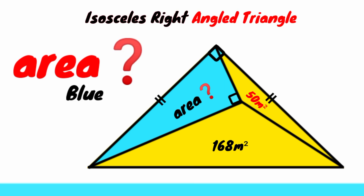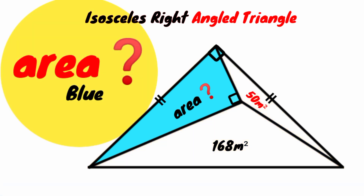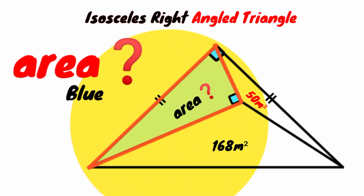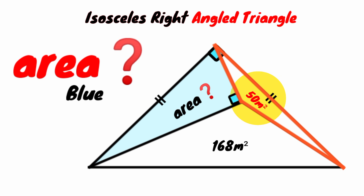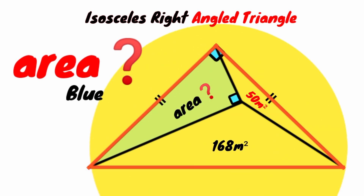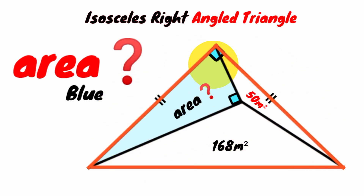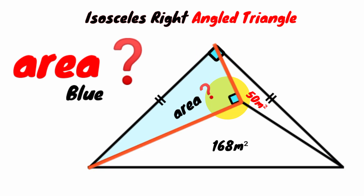Hi friends, I want to show you the perfect method to solve this question. We are to calculate the blue area, that is the area of this triangle. Look at this triangle — its area is given to be 168 meters squared, and that of this one is given to be 50 meters squared. This triangle is an isosceles right angle triangle because this side and this side are congruent, and this is a right angle here too. So how can we solve this?